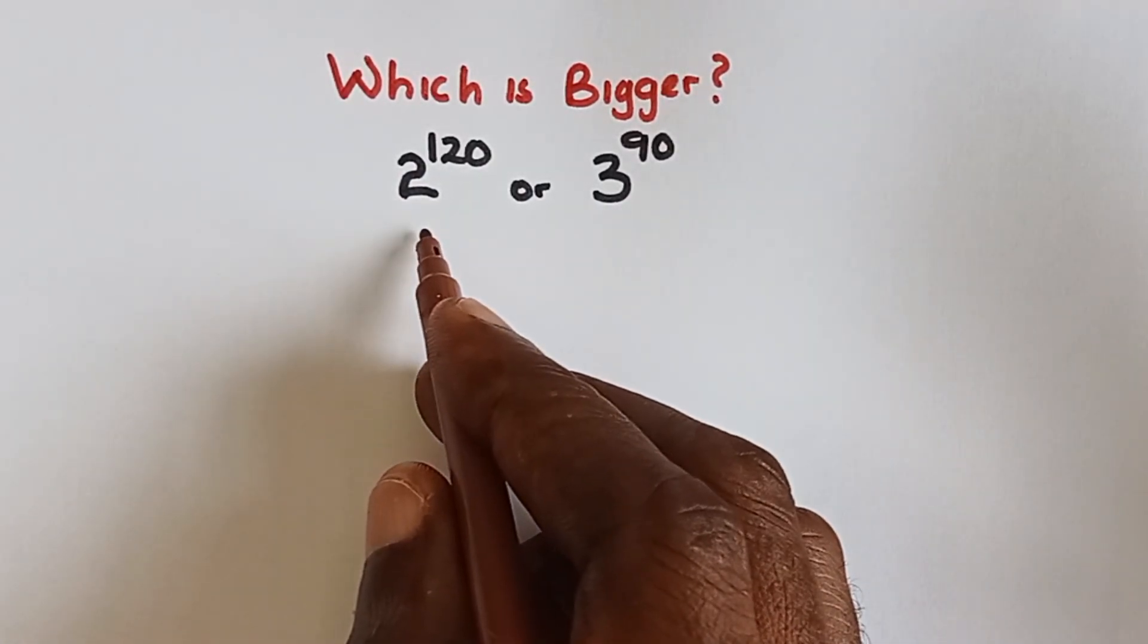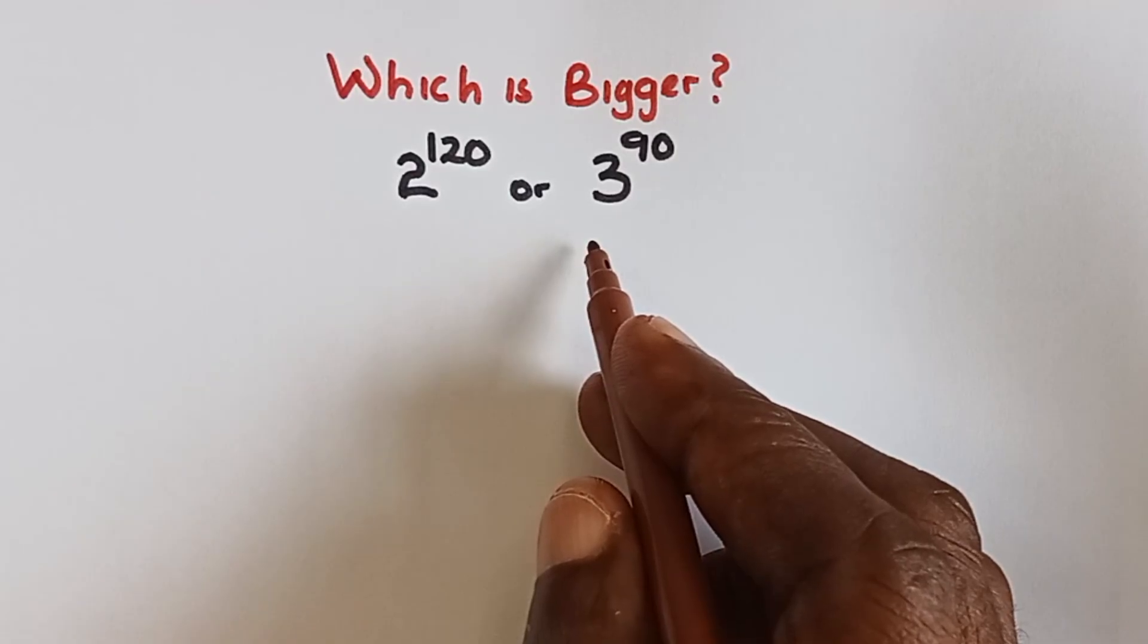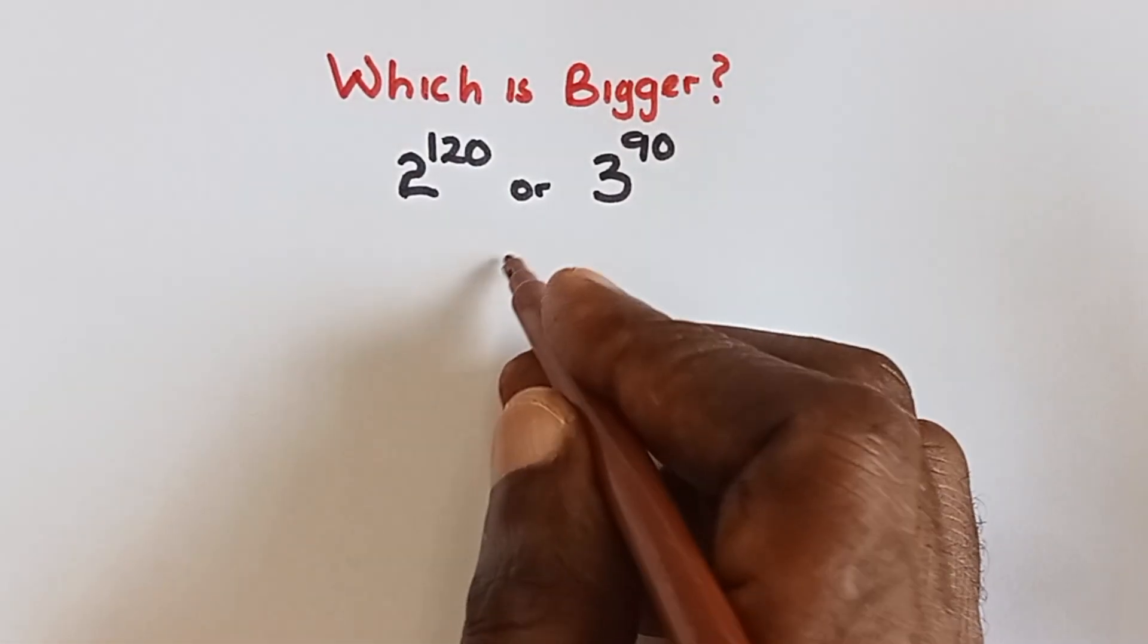We have 2 raised power 120 and we have 3 raised power 90. We want to check which one is bigger without using a calculator. Solution.